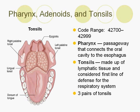The next code range in the digestive system includes codes for the pharynx, adenoids, and the tonsils. The pharynx is commonly known as the throat, and tonsils are masses of lymphatic tissue that aid in the defense of the body. There are three pairs of tonsils.